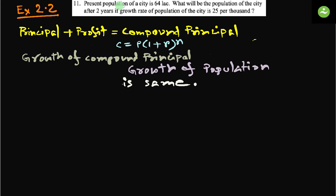Here we have to deal with population instead of money or principal. But we know in case of money, principal plus profit becomes compound principal. When we add the profit with principal, the principal gets bigger and we call that compound principal. The rate is applied to compound principal in case of compound profit.